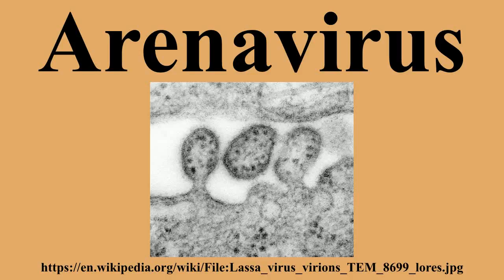Some arenaviruses are zoonotic pathogens and are generally associated with rodent-transmitted disease in humans. Each virus is usually associated with a particular rodent host species in which it is maintained. Arenaviruses persist in nature by infecting rodents first and then being transmitted into humans. Humans can be infected through mucosal exposure to aerosols, or by direct contact of abraded skin with infectious material derived from infected rodents. Aerosols are fine mists or sprays of rodent-dried excreta, especially urine dropped in the environment. Most arenaviruses caught by humans occur within their own homes, factories from contaminated food, or within agricultural work areas.